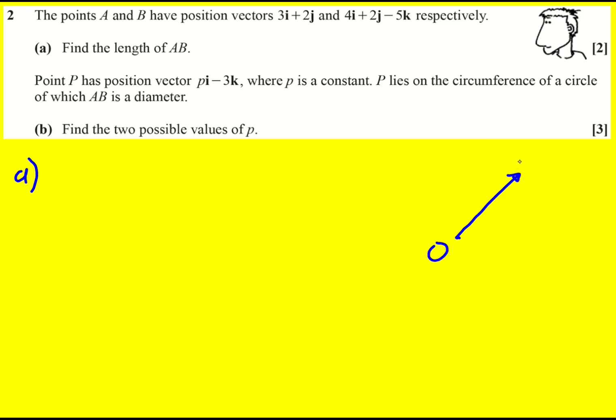So if I have the origin, and I'm going to a, then that would describe this position vector 3, 2, and then there's going to be a 0 as well for the k component. And then to b we've got 4, 2, minus 5.